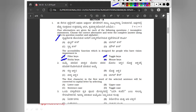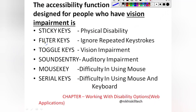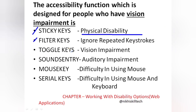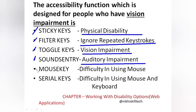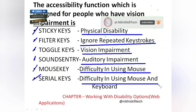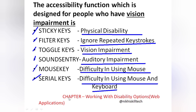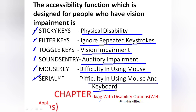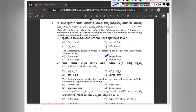I am giving you some additional knowledge within the syllabus which is frequently asked in different question papers. There are several keys which have their specific function. Sticky keys are used for people who have a physical disability. Filter keys are used to ignore repeated keystrokes. Toggle keys are used for people who have a vision impairment. Sound centric key is used for people who have an auditory impairment, and mouse keys are used for people who have difficulty using both mouse and keyboard. The answer is toggle key — toggle key is used for people who have a vision impairment.